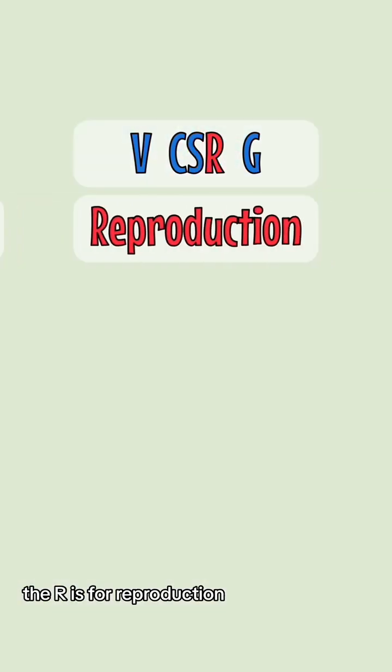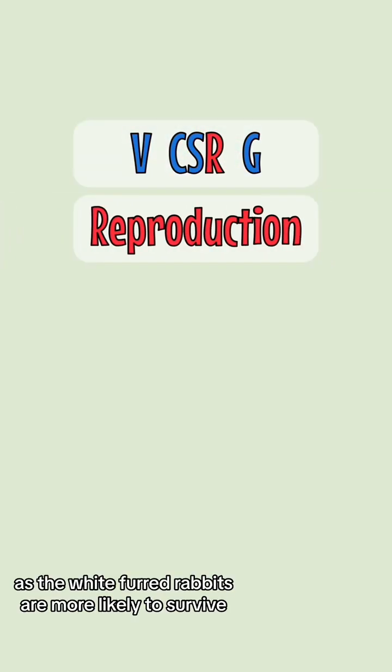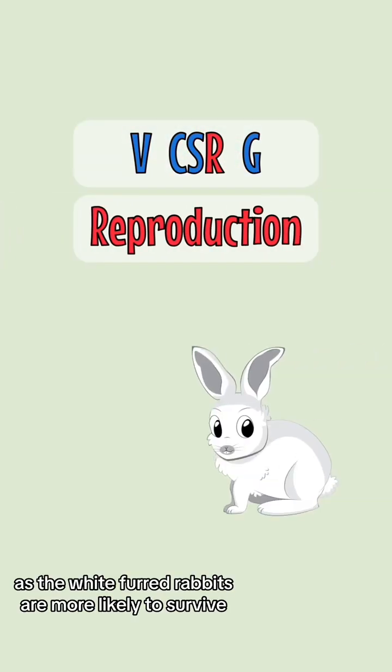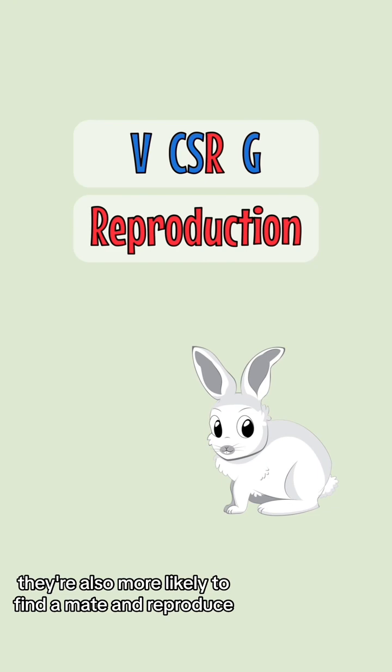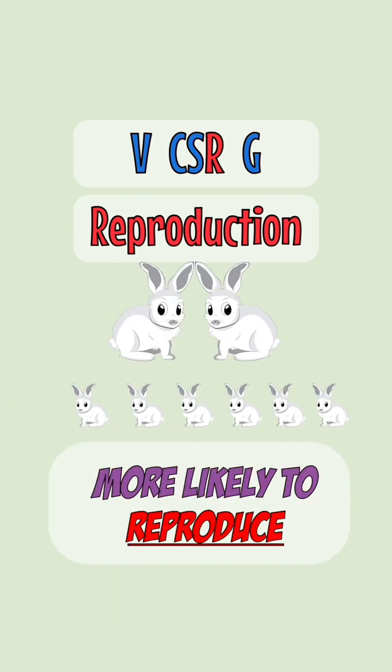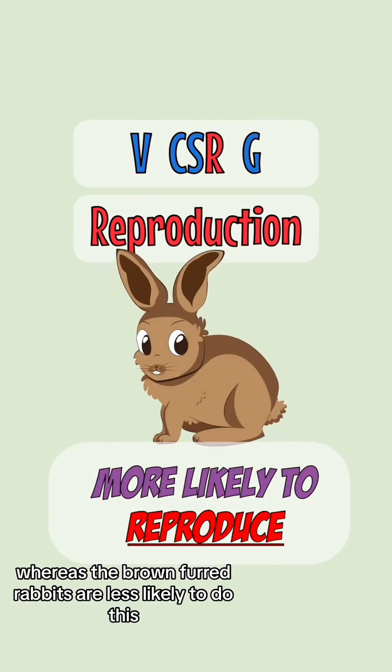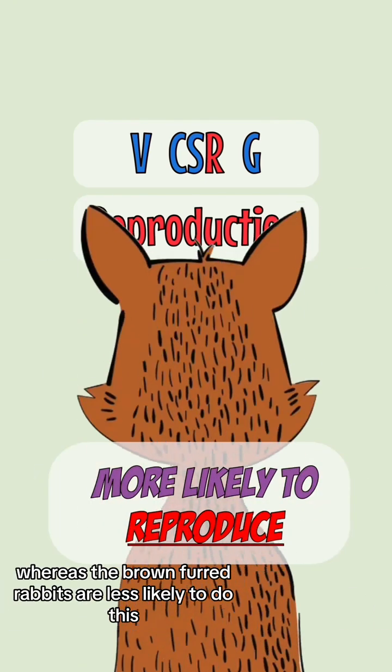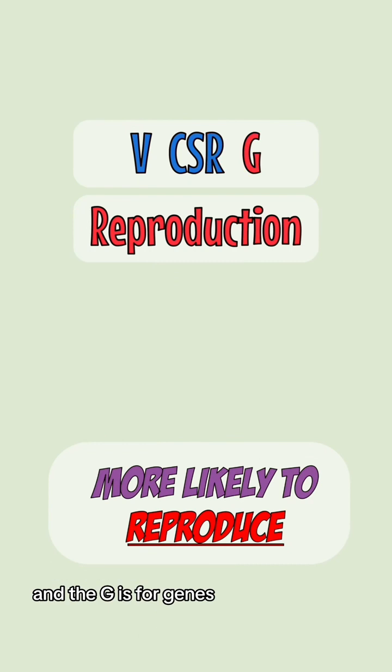The R is for reproduction. As the white-furred rabbits are more likely to survive, they're also more likely to find a mate and reproduce, whereas the brown-furred rabbits are less likely to do this.